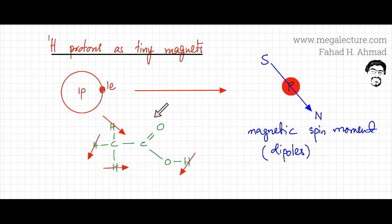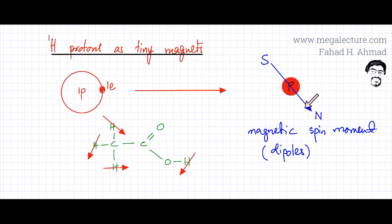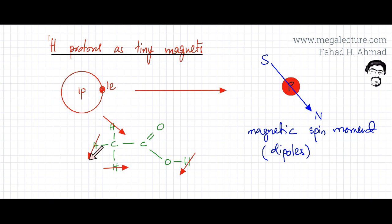I've drawn this ethanoic acid molecule and you can see all these hydrogen atoms with their proton nuclei. The proton of a hydrogen atom is going to act as a tiny magnet, so it's going to have a magnetic field with a north pole and south pole. Each of these hydrogen atoms would be exhibiting a magnetic field. I've drawn these arrows pointing in random directions — all of these are acting as tiny magnets.